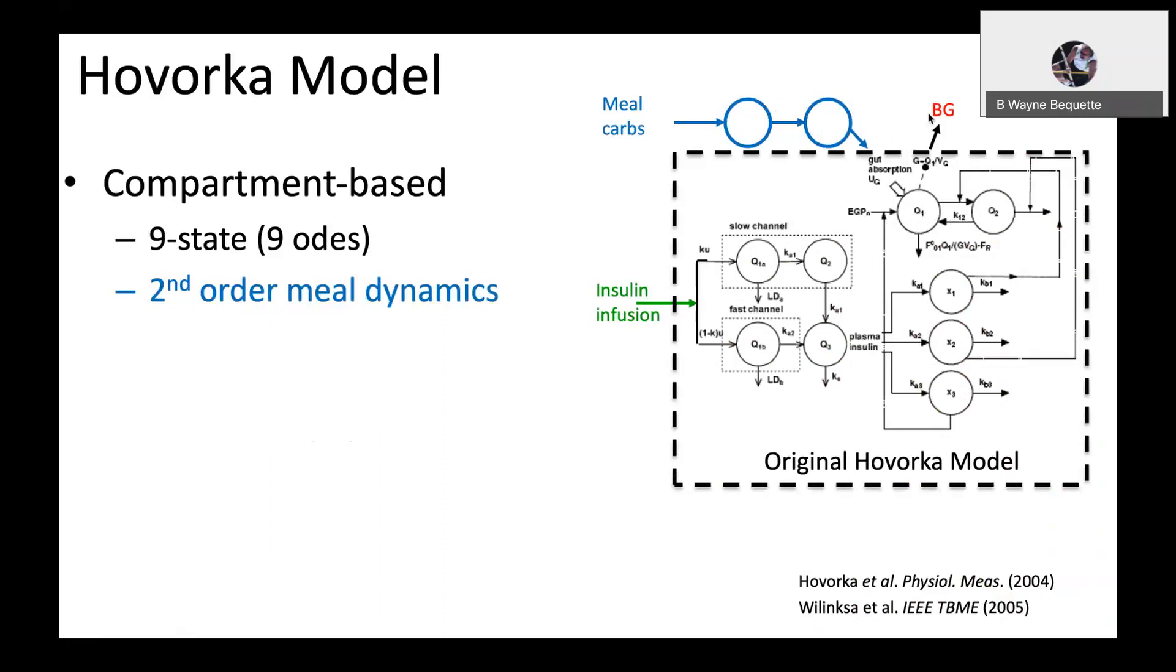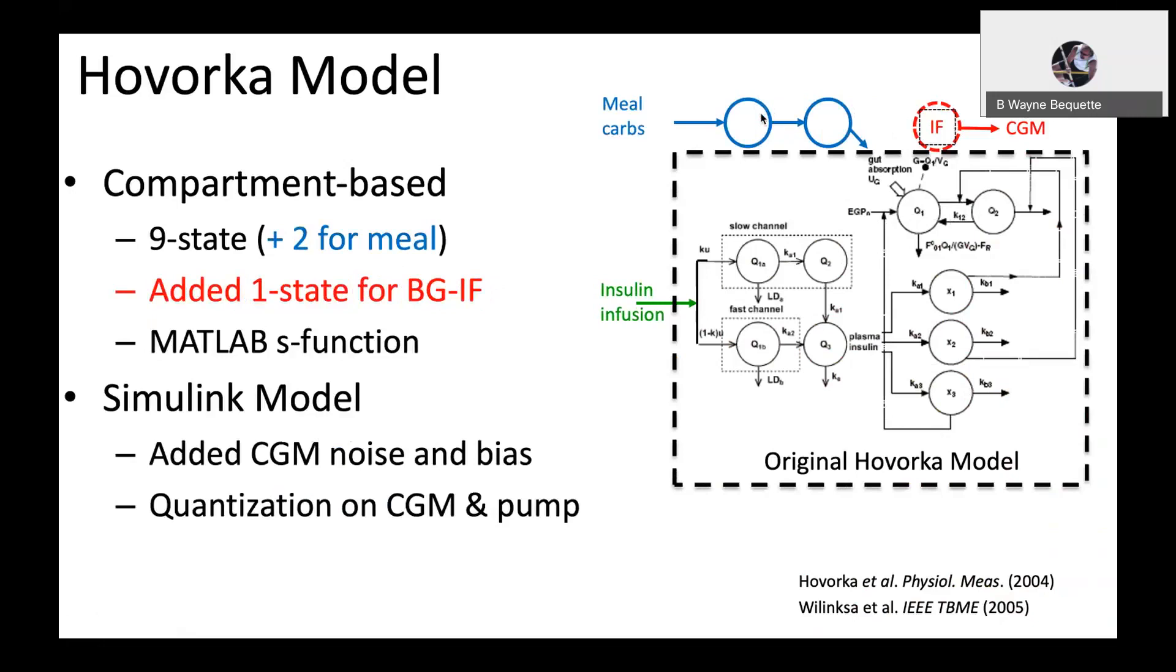We have second-order meal dynamics shown here, so that adds a couple of other compartments. In addition, since a continuous glucose monitor is not directly measuring the blood glucose, it's measuring the interstitial fluid glucose. There's a dynamic lag between the blood glucose and the interstitial fluid glucose that is represented by one more state or differential equation. We encode these in a MATLAB S function and use them in a Simulink model so we can add measurement noise and bias to the continuous glucose monitoring signal and also add quantization on the CGM and pump.